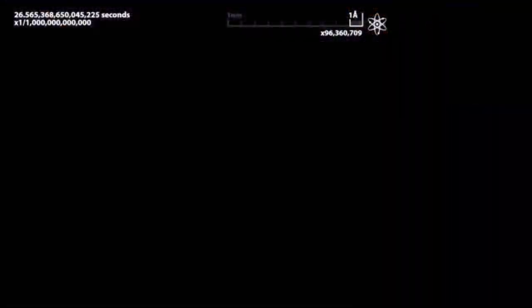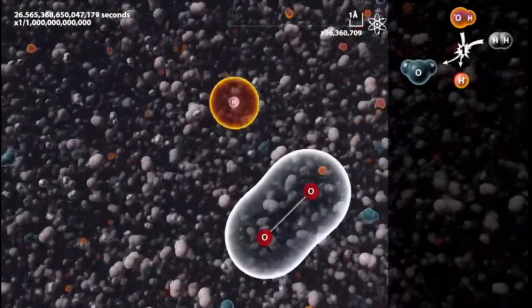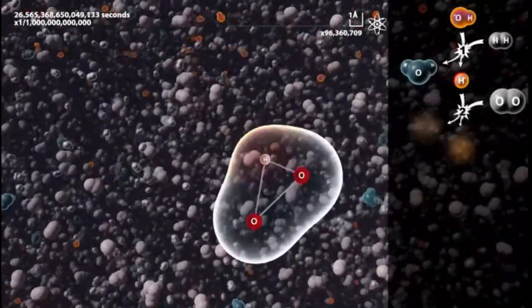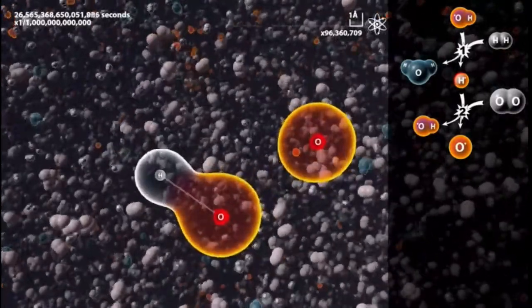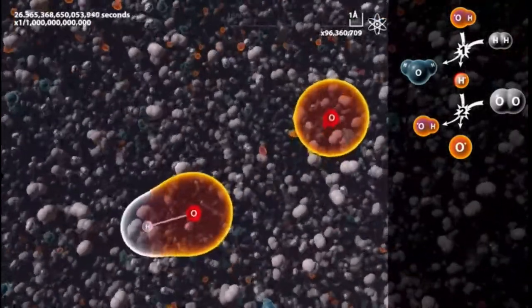It has so much energy that if it touches an oxygen molecule, it breaks it into two new radicals. One of these radicals is an oxygen atom. Let's follow that atom and see what happens.